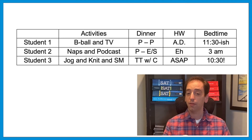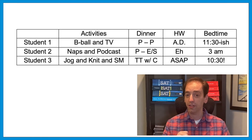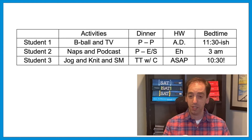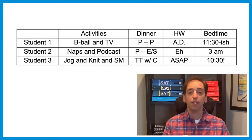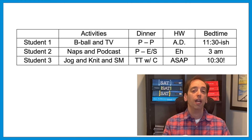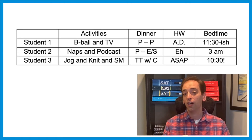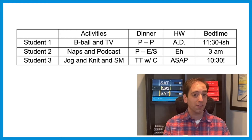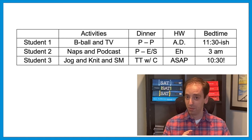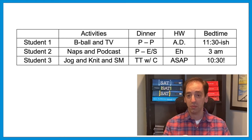Student 2 takes a nap, then later works on his podcast. Dinner was also pizza, but with eggplant and spinach. Homework — he might get to it, he might not. Bedtime: 3am. And student 3 is very busy — she'll jog, knit, and work on social media. Taco Tuesday in that house, don't forget the cilantro. Homework ASAP, right away. And bedtime 10:30 sharp — there's an exclamation point.